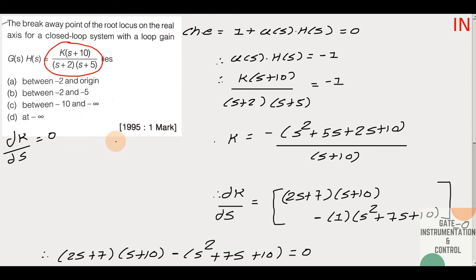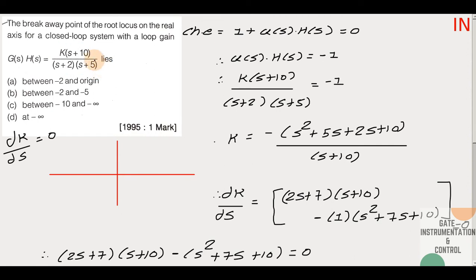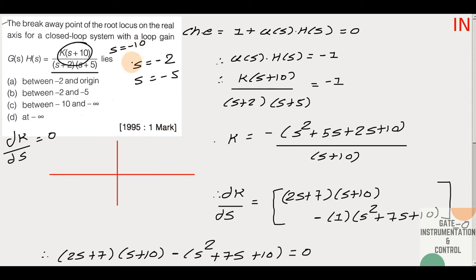We can draw the basic root locus diagram. Looking at G(s)·H(s), we can see the poles. We have a pole at minus 2, a pole at minus 5, and a zero at minus 10. So on the real axis: here is minus 2, here is minus 5, here is minus 10.